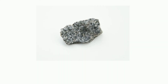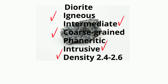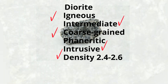In summary, diorite is an igneous rock of intermediate color. It has a coarse phaneritic texture. It's intrusive and has a density between 2.8 and 3.0 grams per centimeters cubed.